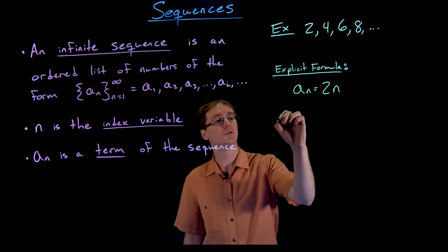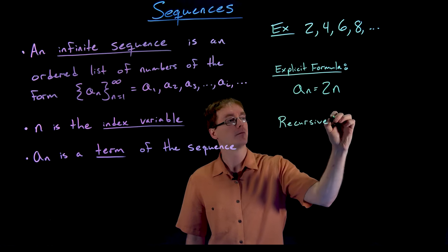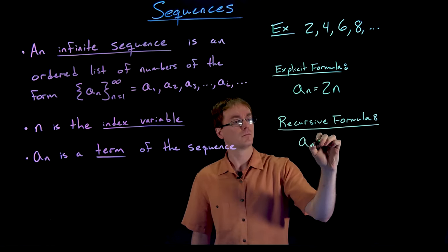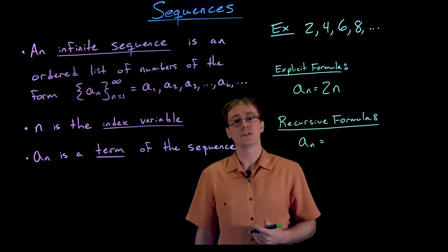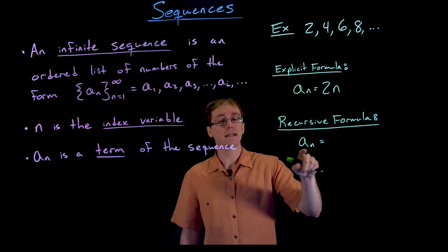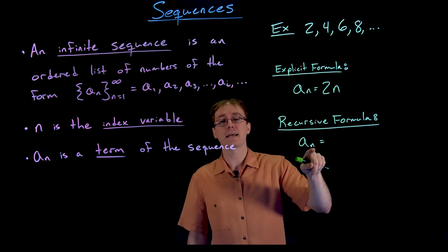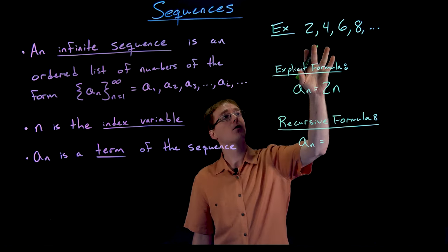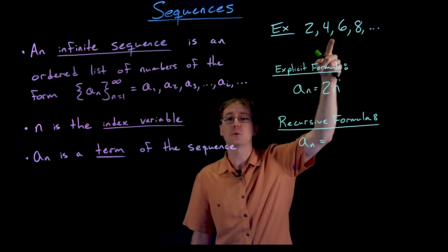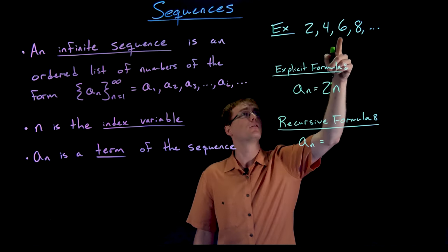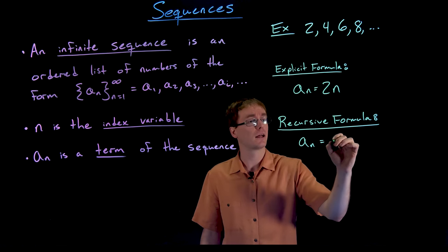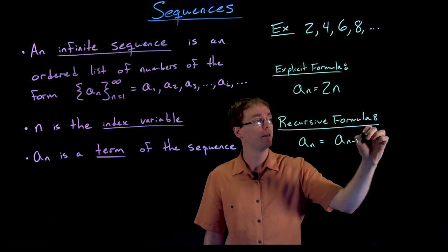There is another way to describe a sequence, and that's using a recursive formula. When using a recursive formula, we define the next term using the previous term. If we think of a sub n as our next term, the previous term comes from index n minus one. So for the sequence 2, 4, 6, 8, to go from two to four we add two; from four to six we add two; from six to eight we add two. So our recursive formula is a sub n equals a sub n minus one plus two.